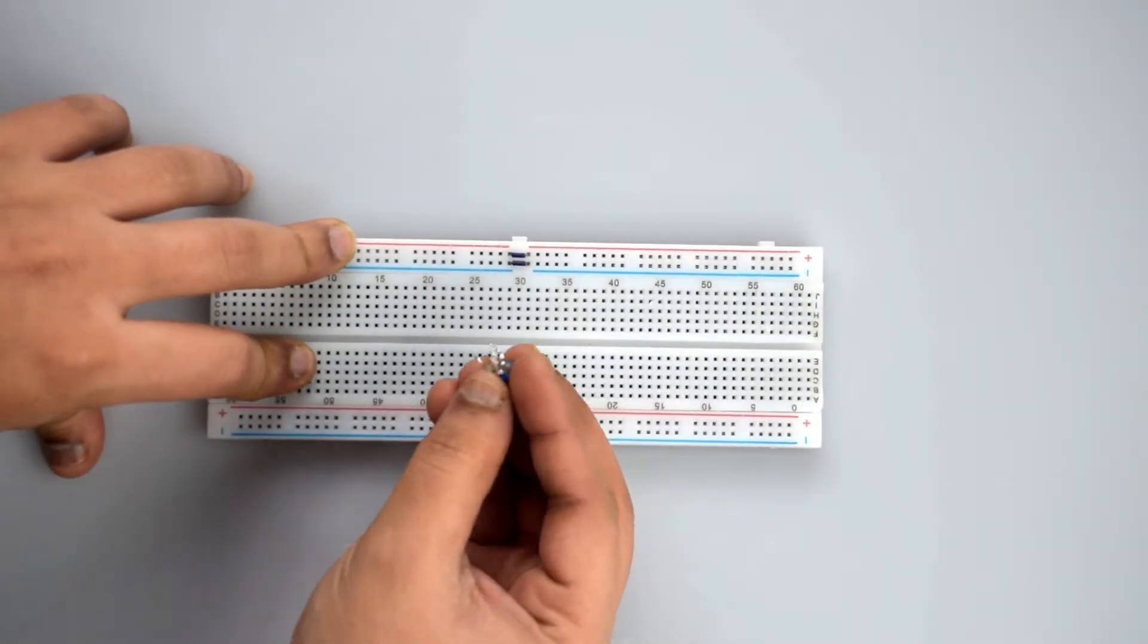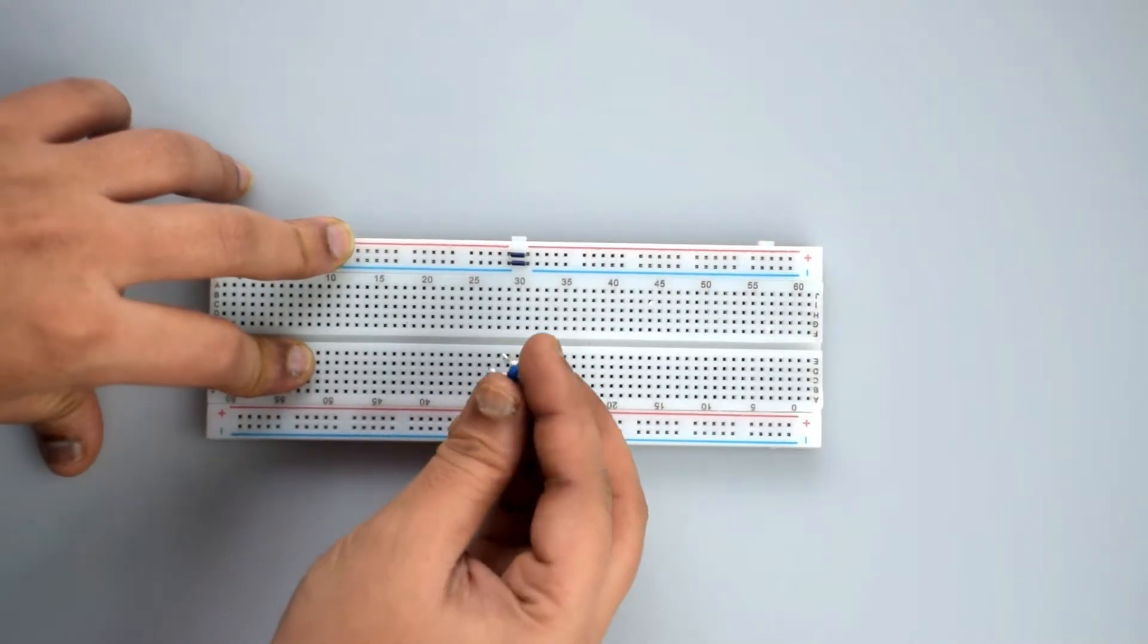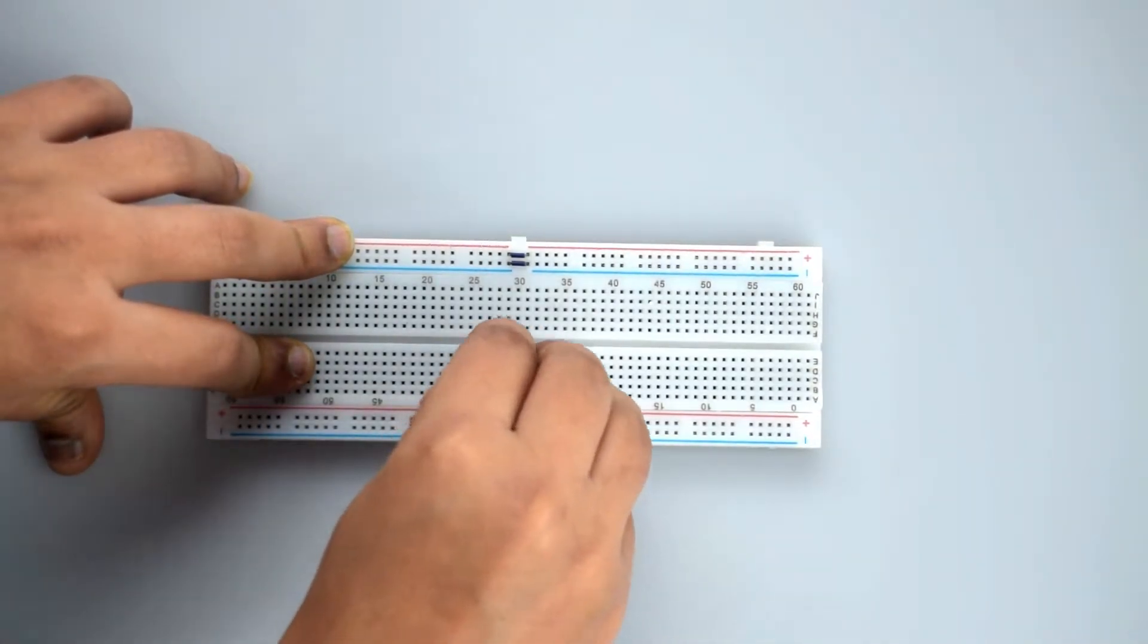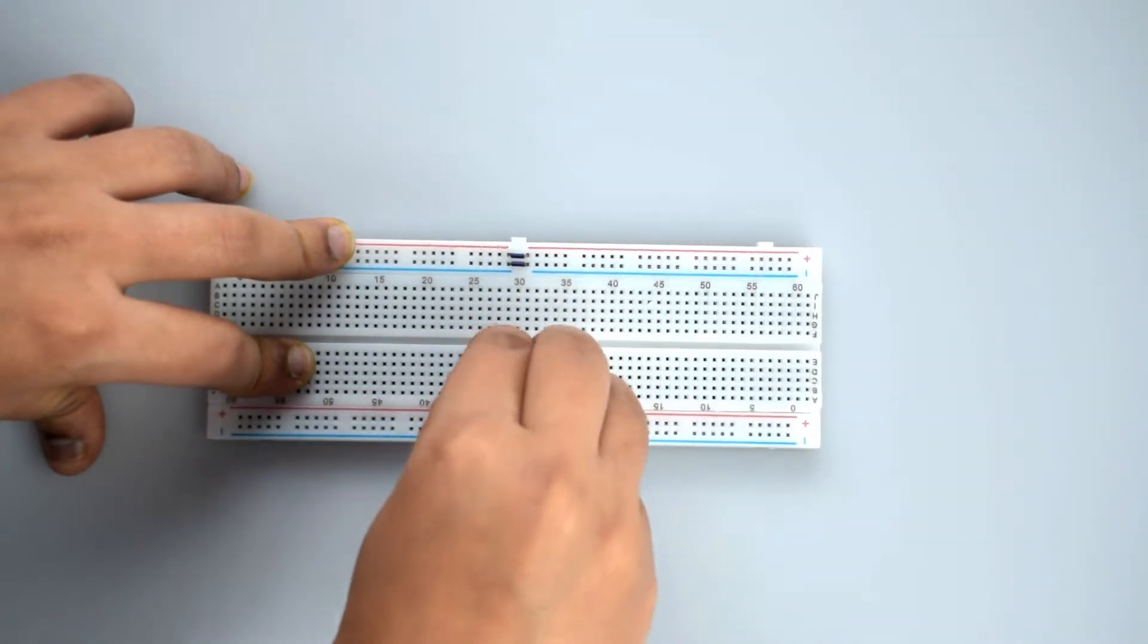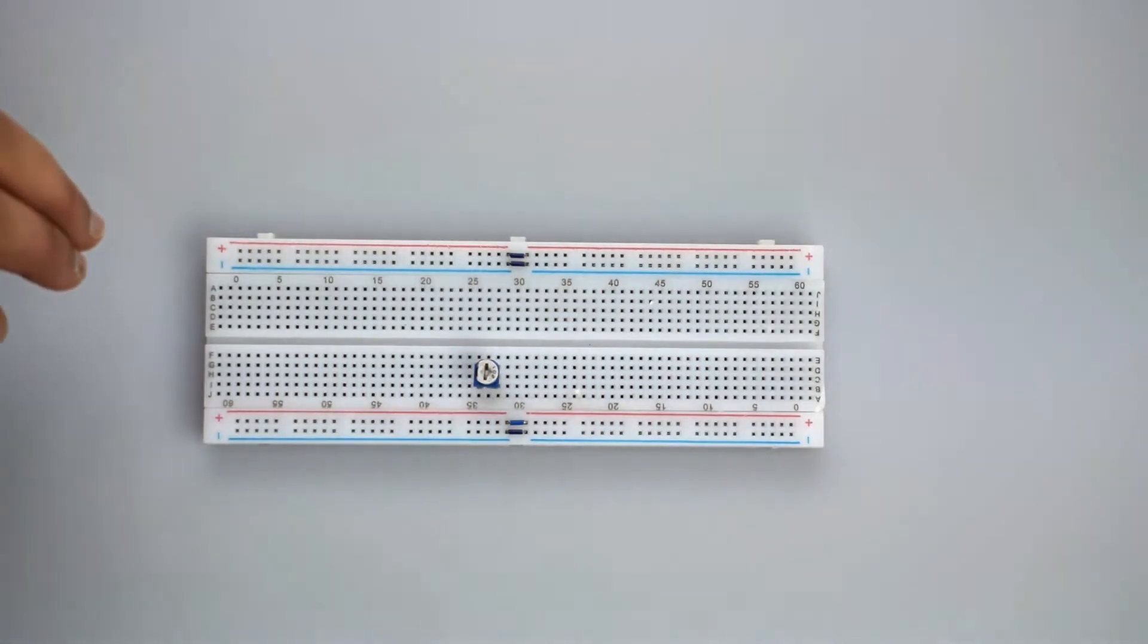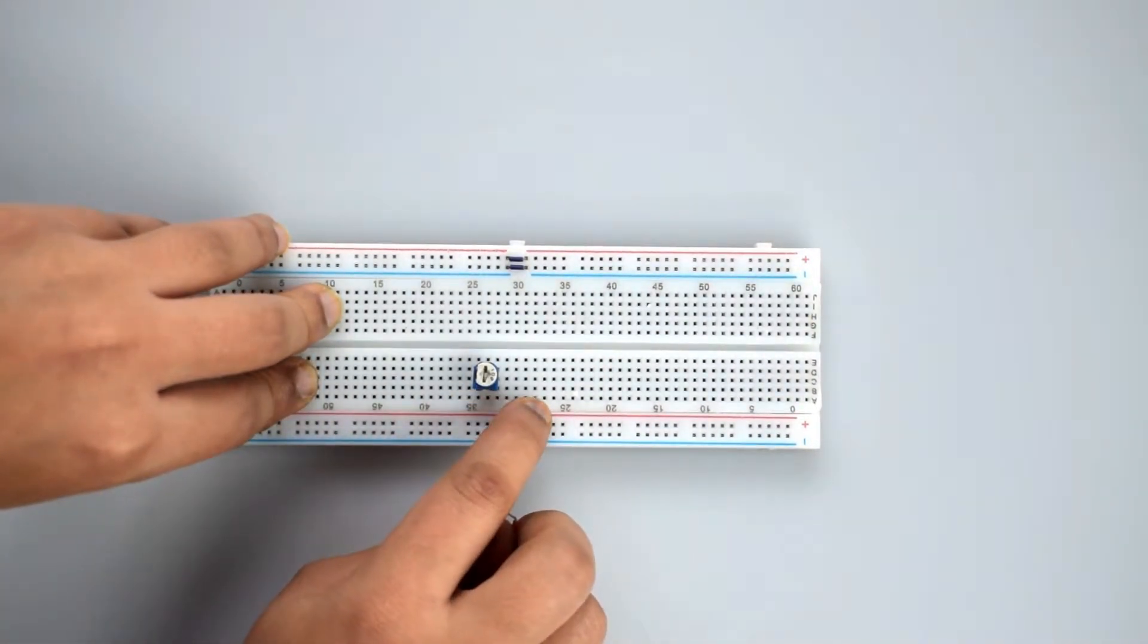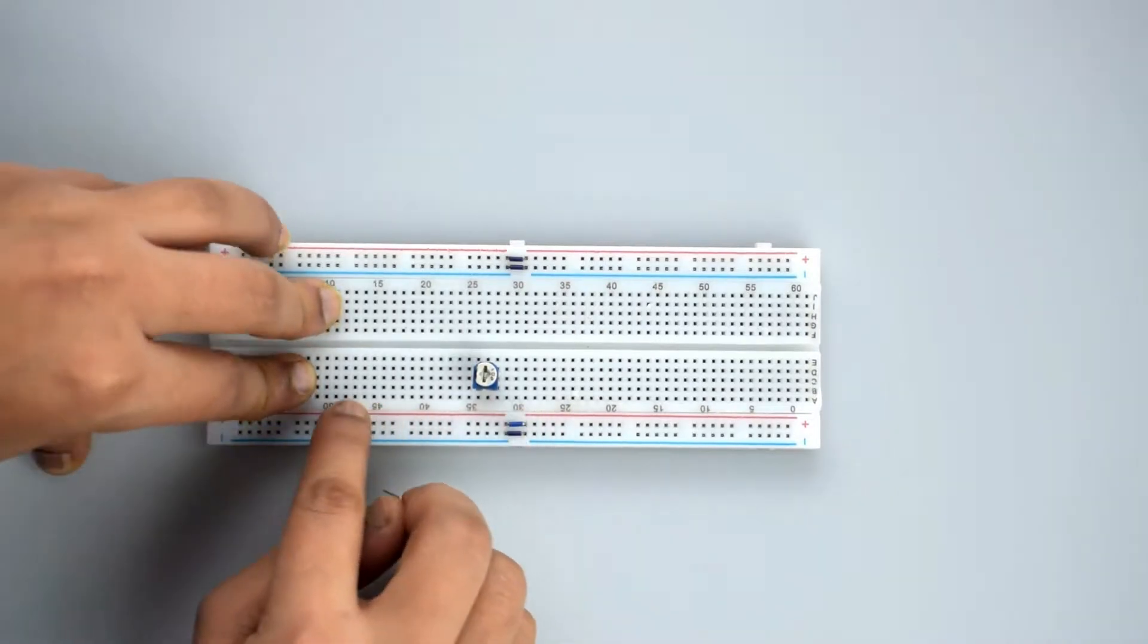Attach the 10k potentiometer to the breadboard. All the pins must be in different rows and columns of the breadboard. Now connect the first and third pin of the potentiometer to the positive rail on the breadboard.